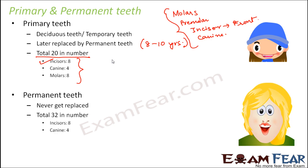They are total 32 in number. In their case, incisors, canines, molars, and premolars are all present. Molars earlier were only eight, but now there are 12 molars. Premolars earlier were not at all there, but now there are eight premolars. That's how the total number of teeth increases from 20 to 32.